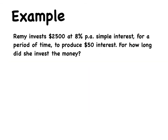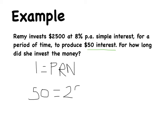Let's look at the next example. Remy invests $2,500 at 8% per annum simple interest for a period of time to produce $50 in interest. For how long did she invest the money? It's actually straightforward. I know the formula I equals PRN. Let's fill in the values I know. The amount of interest is $50. The principal is $2,500. The rate is 8% per annum, written as a decimal: 0.08. What I don't know is the number of years — N.